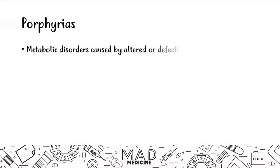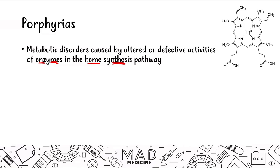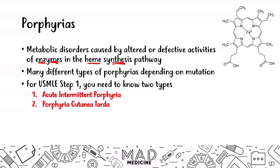Porphyria is a metabolic disorder caused by altered or defective activities of enzymes. These enzymes are not working properly, which leads to decreased heme synthesis and abnormal heme production. There are many different types of porphyria depending on the mutation, but as far as Step 1 is concerned you only need to know two main types: acute intermittent porphyria and porphyria cutanea tarda. Today we're going to be focusing on acute intermittent porphyria specifically.